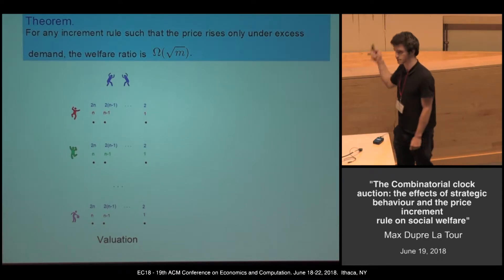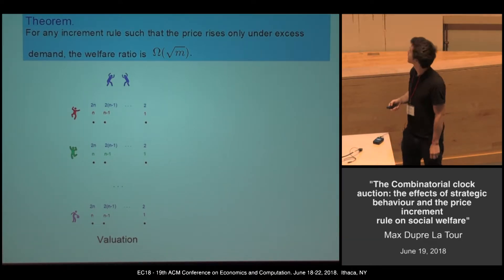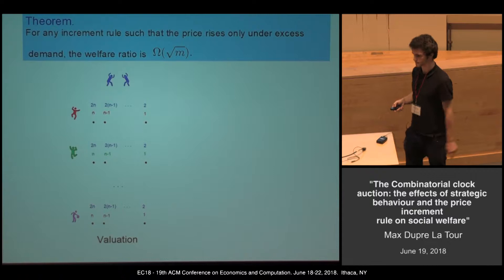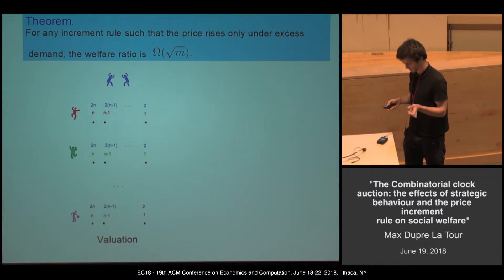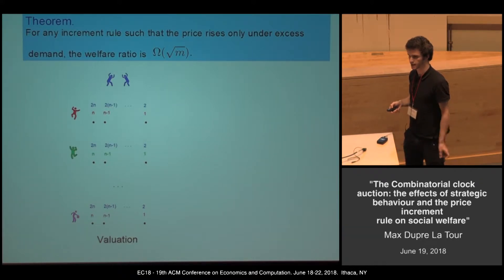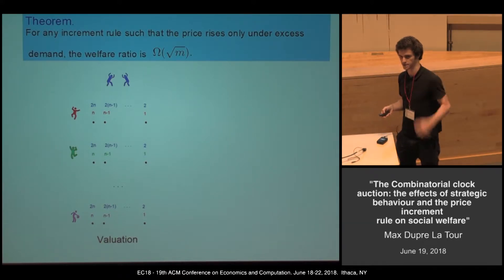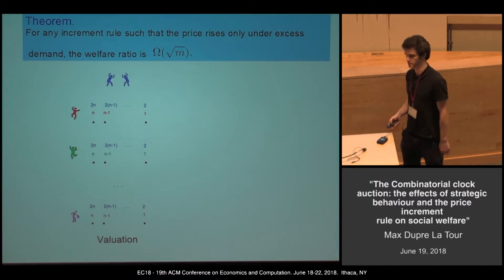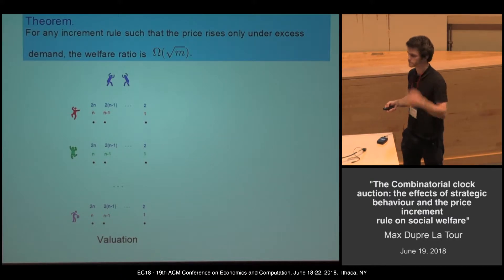This is the example that shows the theorem, but first I will give an intuition. A bad example of the CCA is when a high-value item is not allocated at all because a small number of bidders push the price of this item really high, and those bidders end up winning some other item so nobody can overbid them.